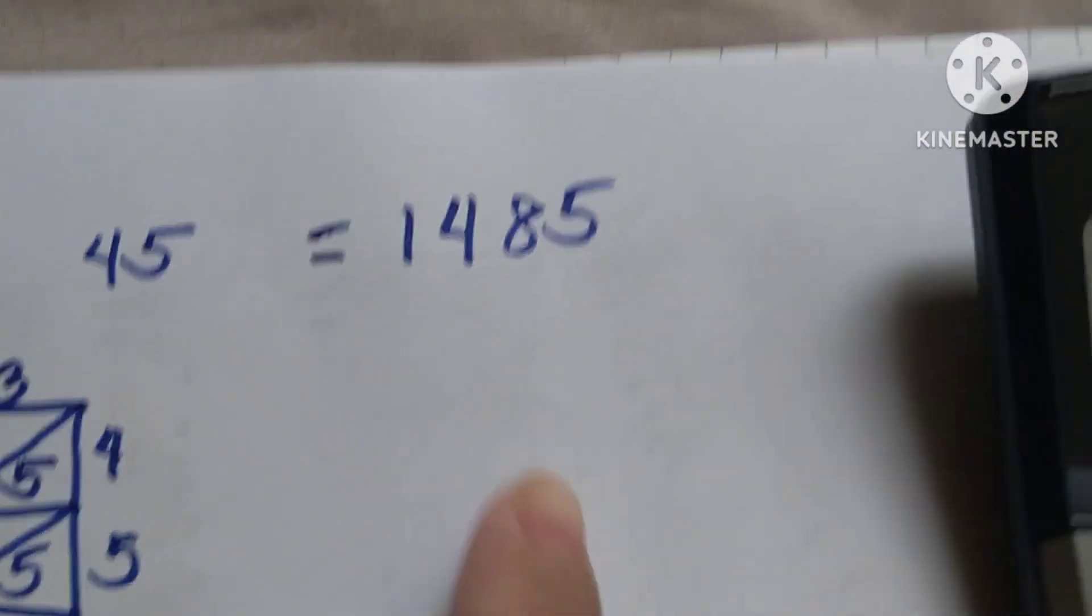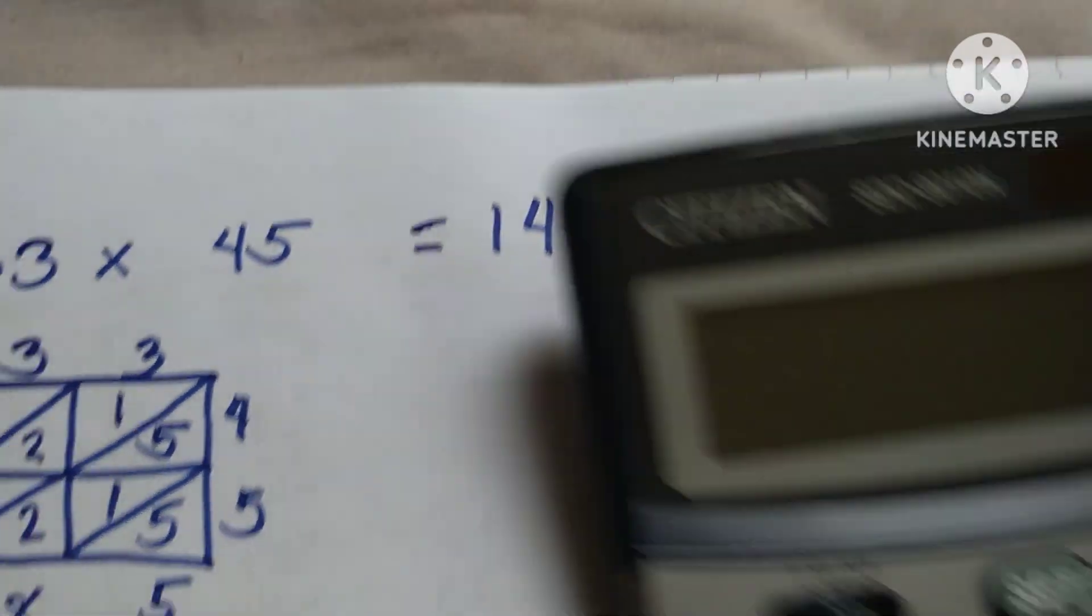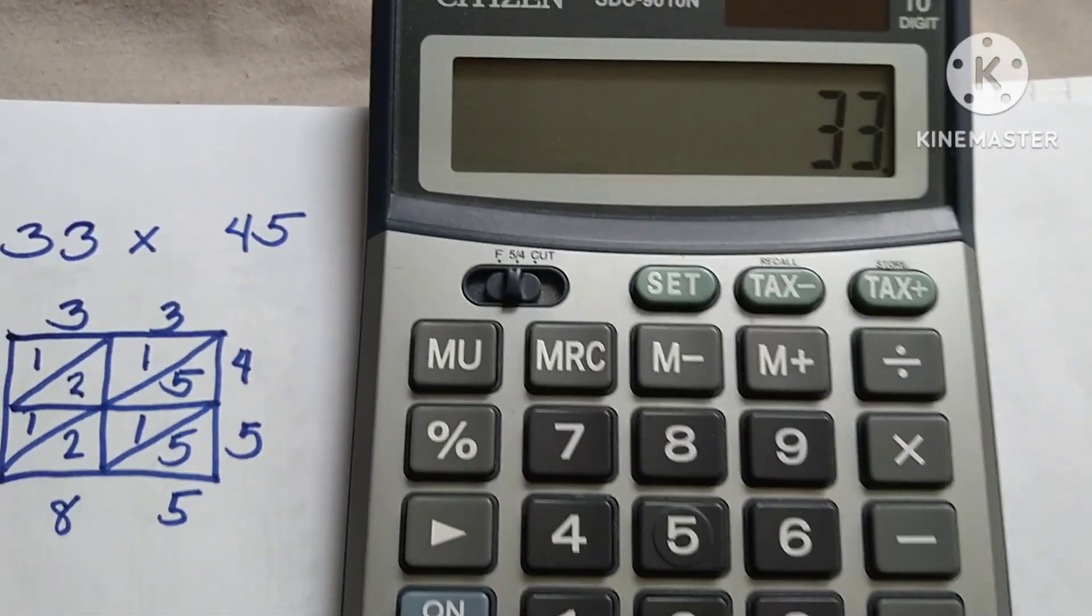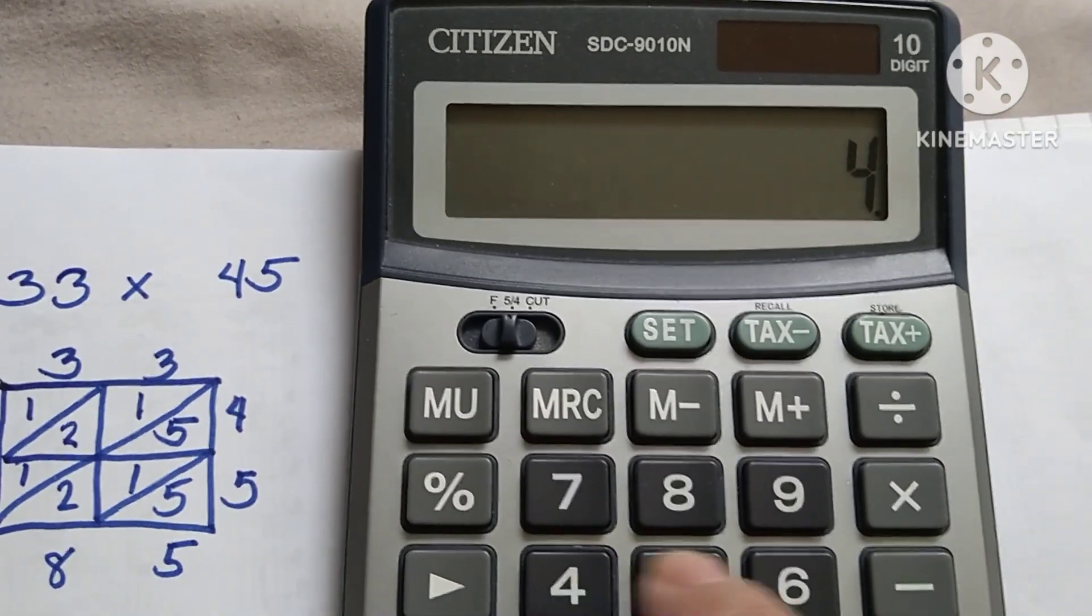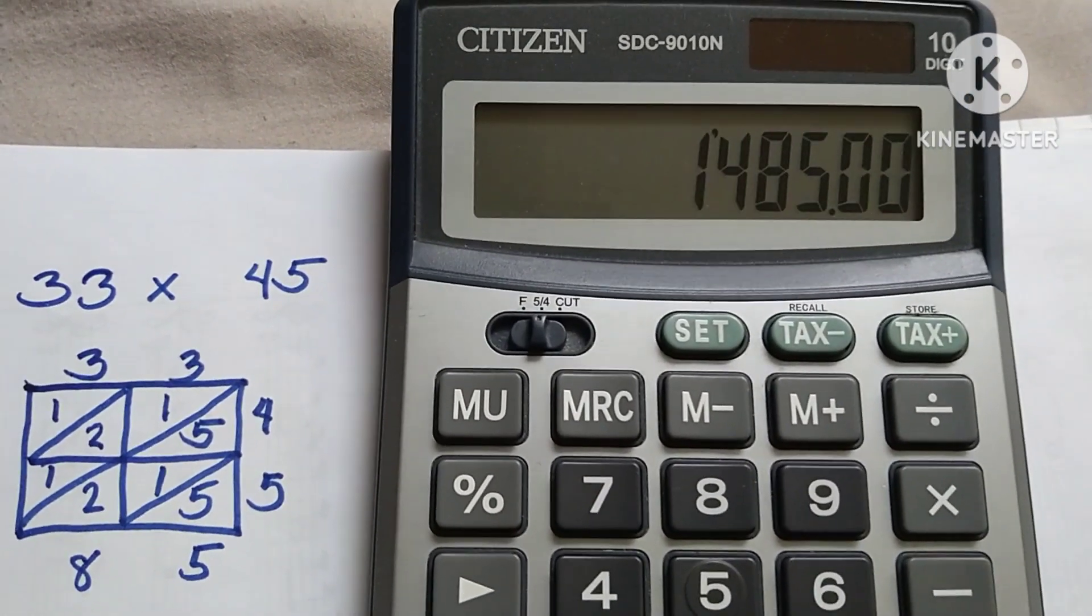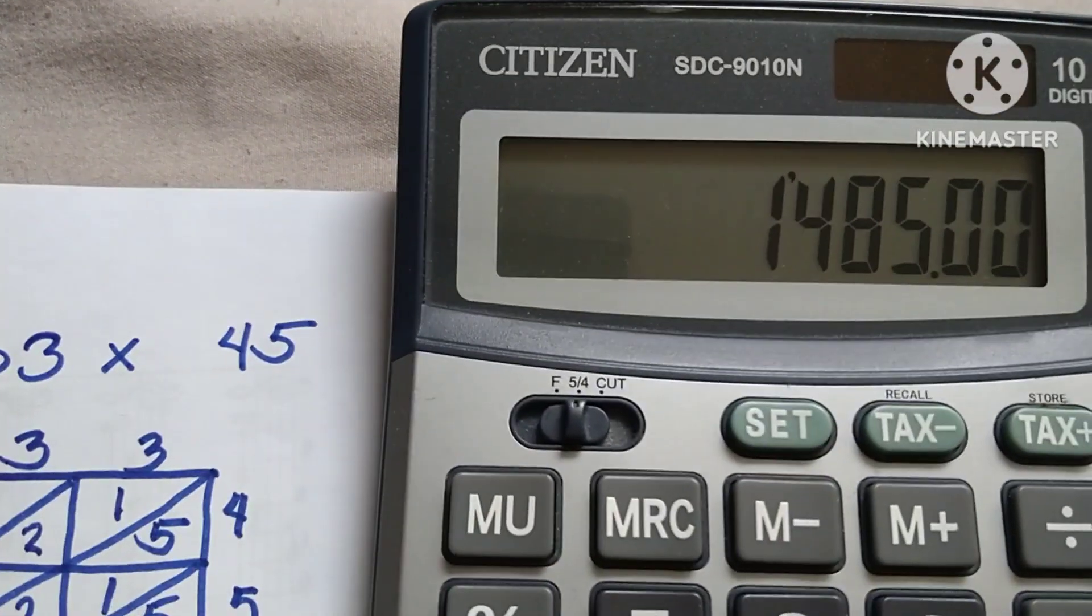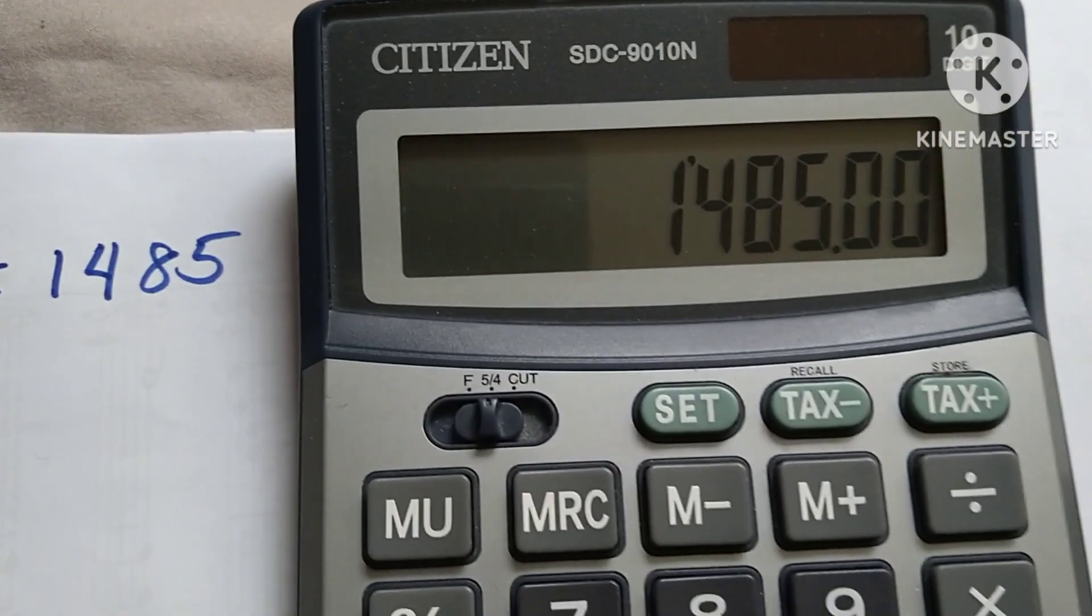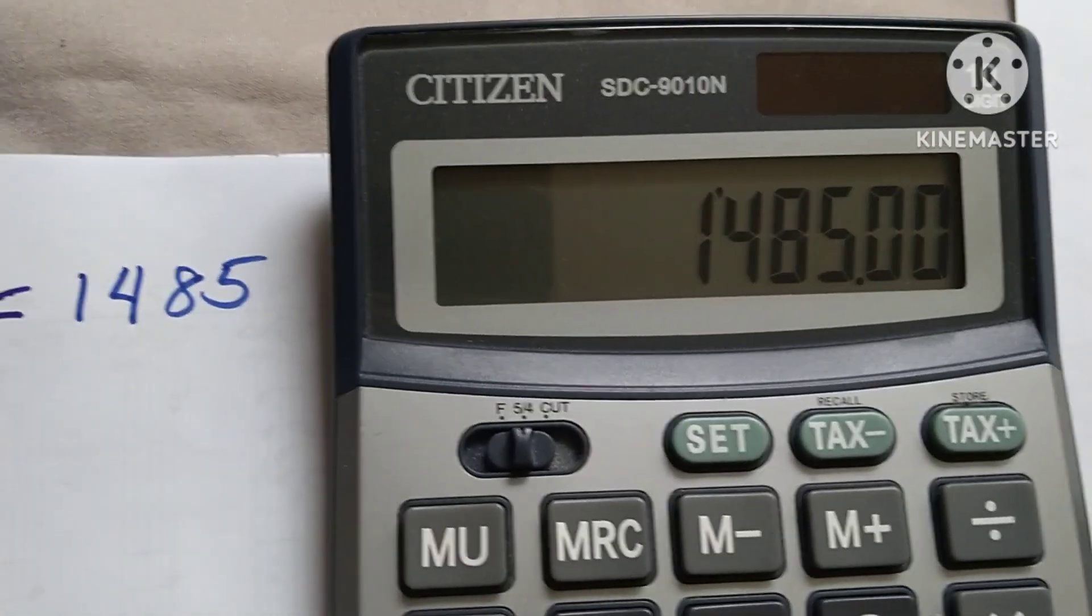Simply copy one. Our final answer is 1485. We check it out using the calculator: 33 times 45 equals 1485. Our answer here is 1485.